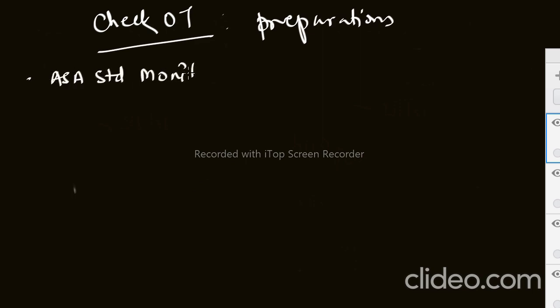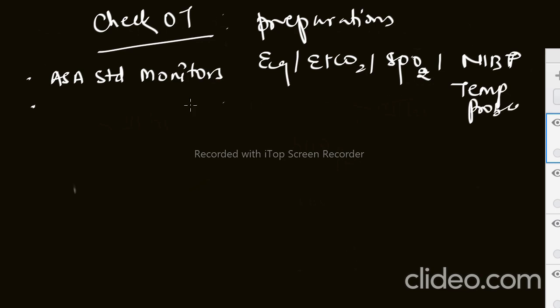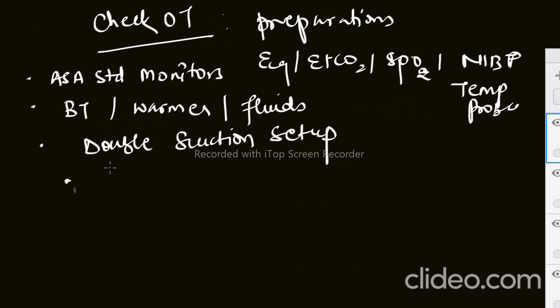We have assessed the patient and done the PAC. Now what we have to do is check the OT. The examiner can ask what preparations you will do before taking this patient into the OT. First of all, we have to see all the ASA standard monitors should be available: ECG, ETCO2, pulse oximeter, NIBP, and temperature probe. Next, we should have BT set for blood transfusion with warmer and warm fluids. We should have double suction setup.